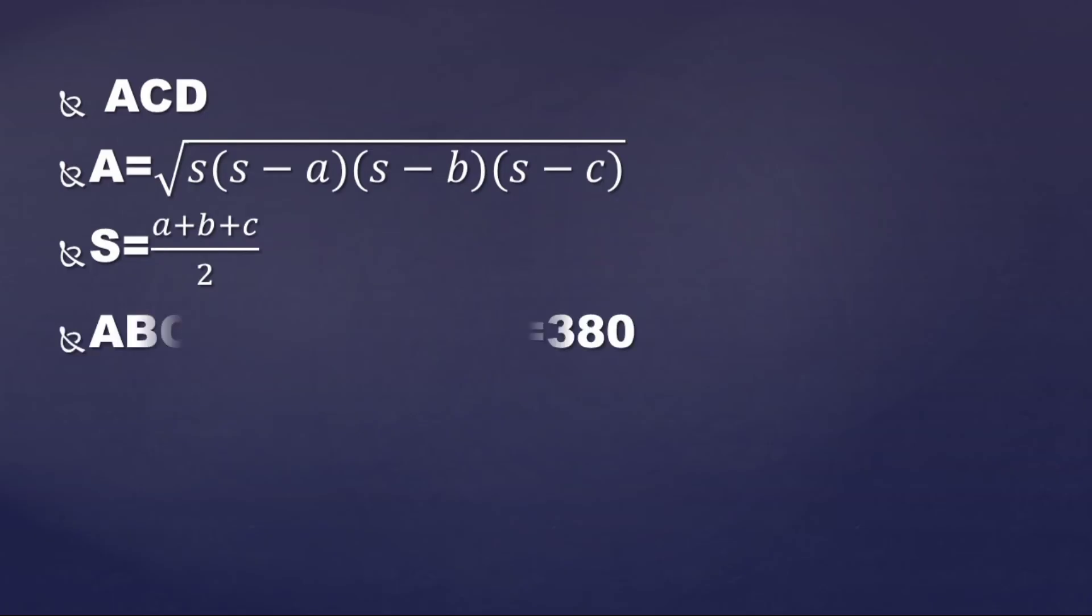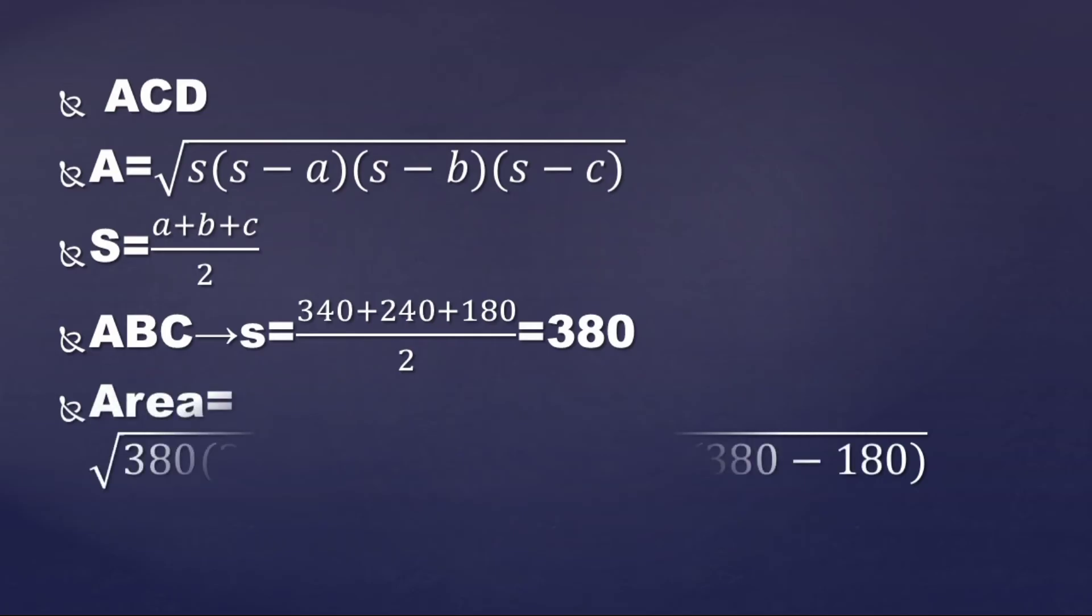Then we go ahead in triangle ACD. We calculate our s, after having done that we find our area using the formula that we had done earlier. So that is the formula for finding the area.